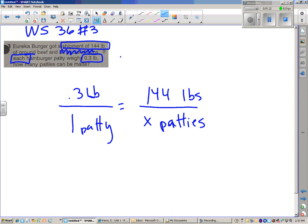So 144 pounds, we can cross multiply and divide. 144 divided by, that was the shipment weight, divided by the weight of one patty.